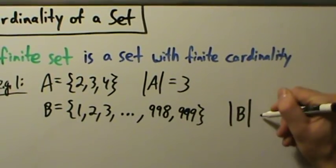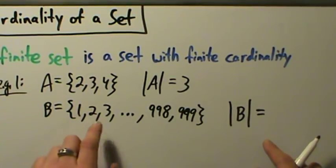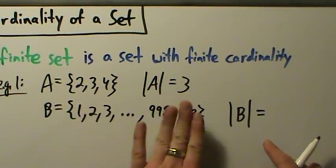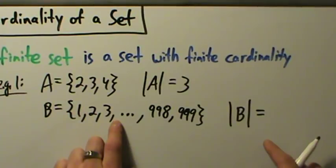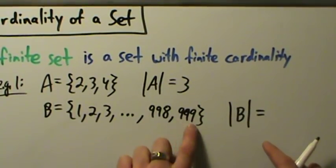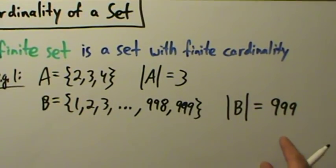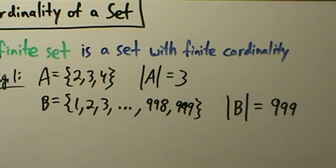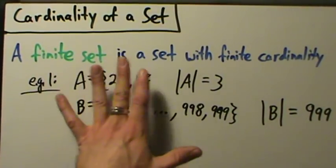What's the cardinality of B? The cardinality is the number of elements in the set. Counting through: 1 is the 1st element, 2 is the 2nd, 3 is the 3rd, and so on — 998 is the 998th element, and 999 is the 999th. So there are 999 elements in that set. That's a big number, but still finite. B is still a finite set because it has a finite cardinality.